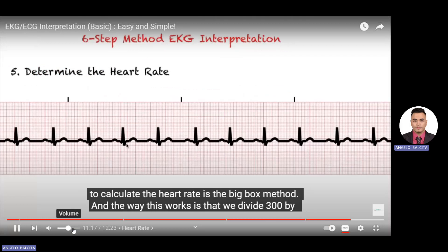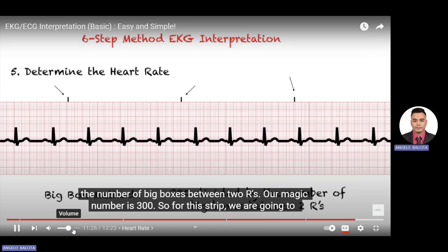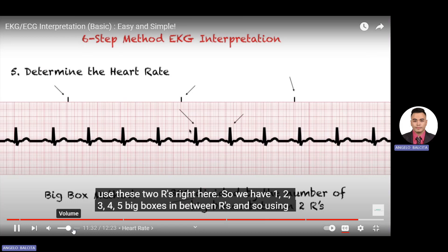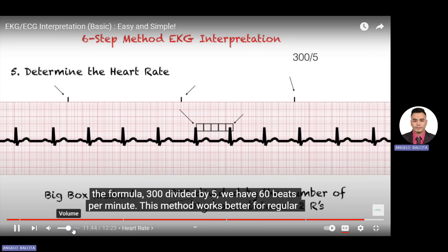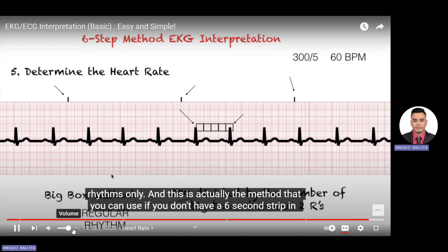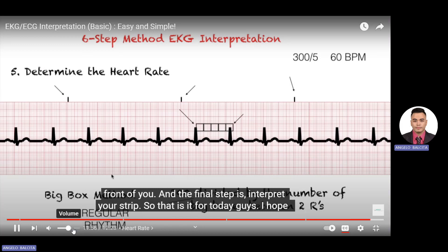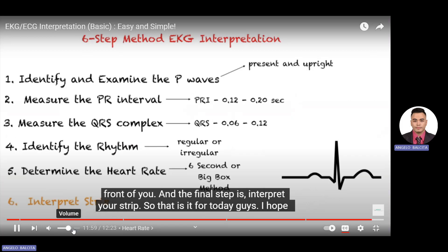The second method is the big box method: divide 300 by the number of big boxes between two R waves. For this strip, there are five big boxes between two R waves — 300 divided by 5 gives 60 beats per minute. This method works better for regular rhythms and can be used when you don't have a six-second strip. The final step is to interpret your strip.